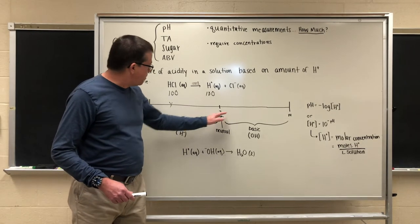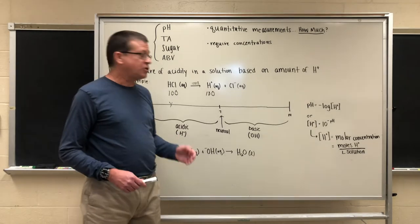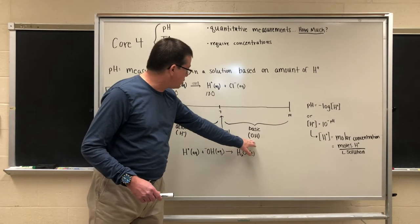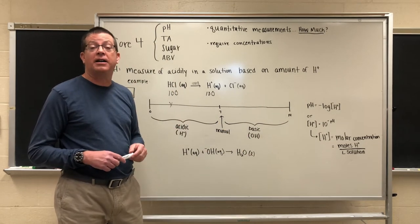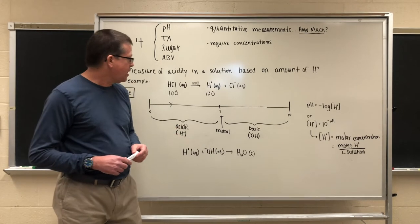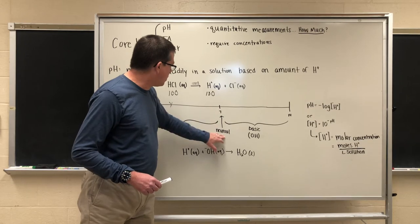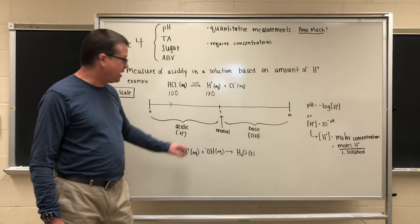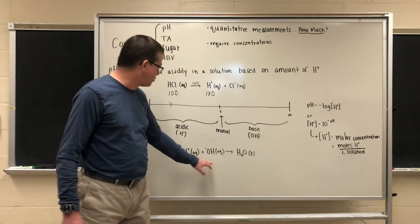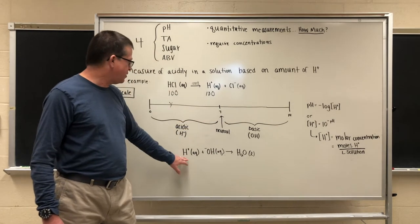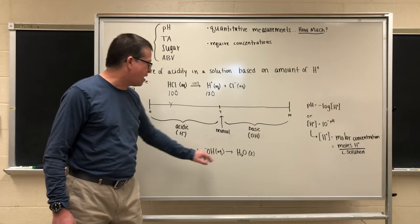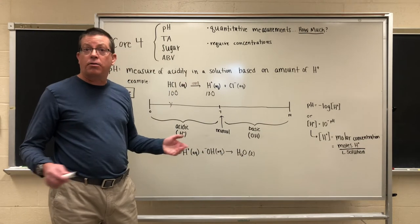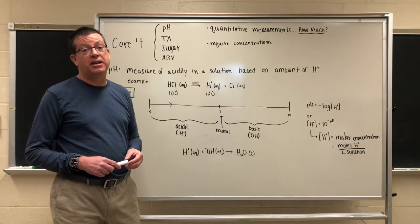If the pH moves above the neutral point of 7 we say that the solution takes on basic properties and these base properties come from the hydroxide ion or OH minus that's the predominant ion we find in a basic solution. In the middle we have the neutral point. That means the concentration of the hydrogen ion in solution from the acid is exactly equivalent to the concentration of the hydroxide ion from the base. These two ions can combine in aqueous solution to give us a molecule of water and we know that water in its pure form is neutral meaning it has a pH of 7.